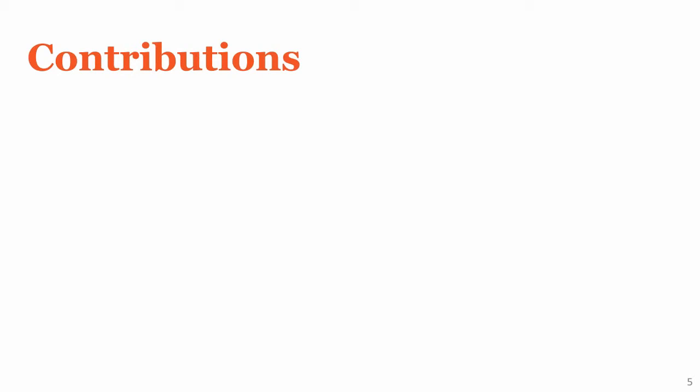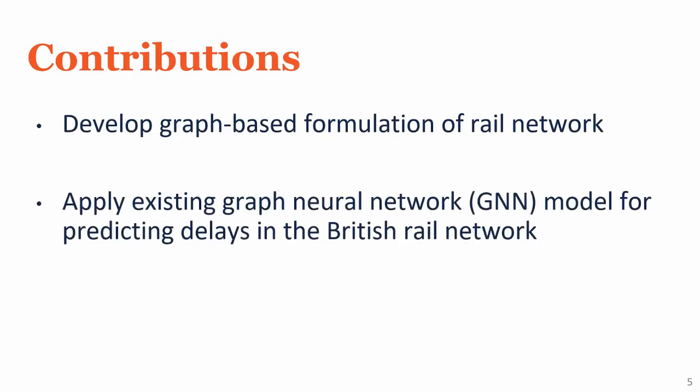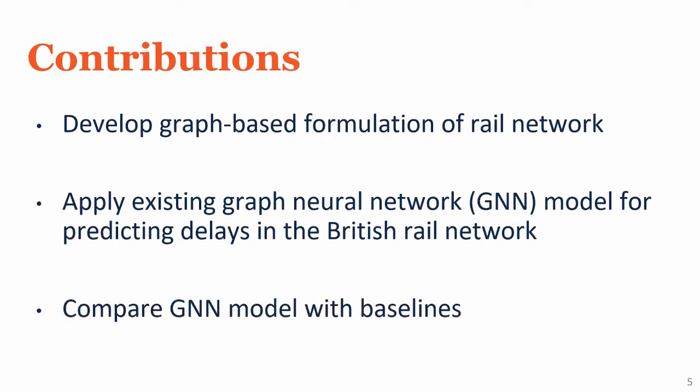We work toward this goal through three primary contributions. First, we develop a graph-based formulation that is suitable for rail networks. Next, we use this graph formulation to apply an existing graph neural network model to predict delays in the British rail network. Finally, we compare this graph neural network model with baselines to understand its prediction accuracy and performance characteristics.